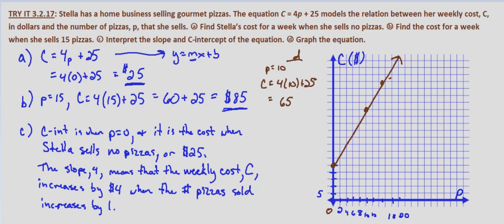So again with part A we found the C-intercept which is $25. With part B we found how much it costs if Stella makes or sells 15 pizzas. With part C the C-intercept is the cost when she sells no pizzas or $25, and the slope 4 means that the weekly cost C increases by $4 when the number of pizzas sold increases by 1 — for every pizza sold it costs her 4 more dollars. With part D we graphed using the C-intercept, the point for 15 pizzas at $85, and a third point so we could have three points to form the line.